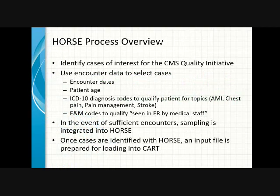So let's briefly tell you what HORSE is doing. Under the Quality Initiative, we're supposed to be reporting certain cases and also reporting encounters in the ED for the outpatient cases. To select these cases, we use a variation of dates, patient age, and ICD-10 diagnosis codes if we're looking for patients with AMI, chest pain, pain management, or stroke, and the E&M codes to look at cases that qualify for the ED throughput.